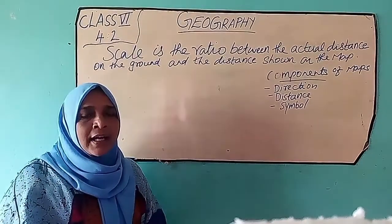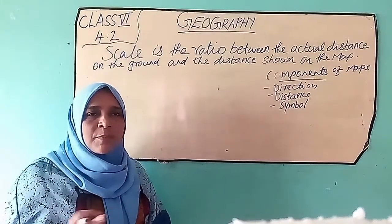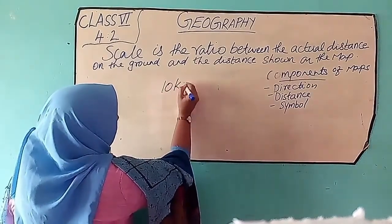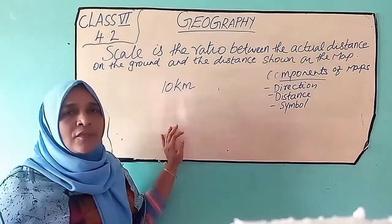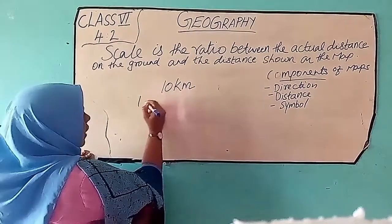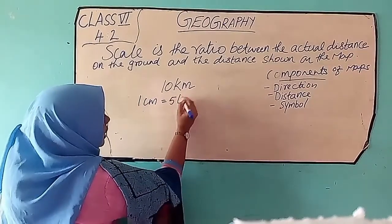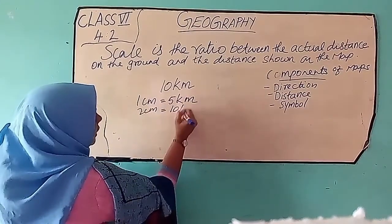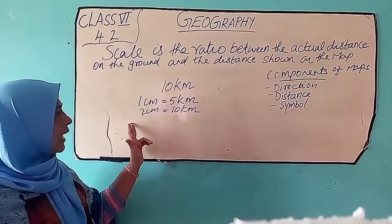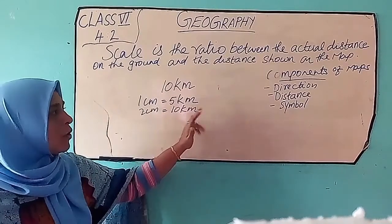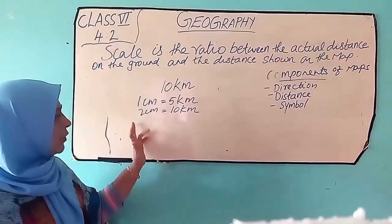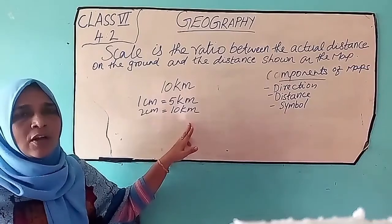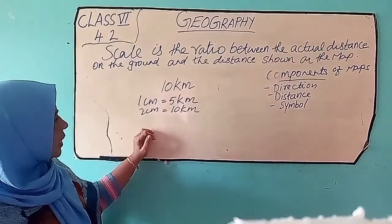For example, your home and the school — the distance between your home and the school is 10 km. Then which scale do we use? We use 1 cm is equal to 5 km. Then 2 cm is equal to 10 km. We use the scale 1 cm is equal to 5 km. You use 2 cm is equal to 10 km on the paper.